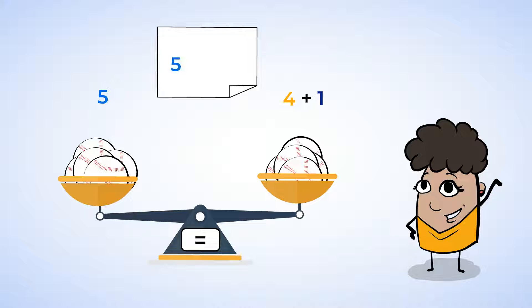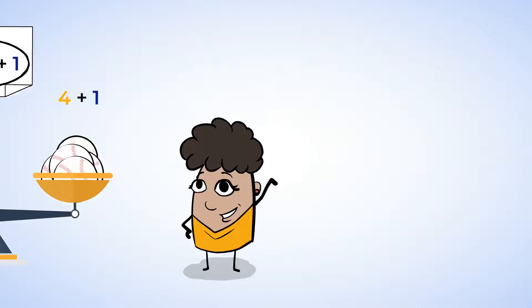And this means that five and four plus one are the same. We can say that they are equal, and we can put an equal sign between them. Five equals four plus one. Now we can check this by counting the baseballs on the right side. We have one, two, three, four, five. There are five baseballs on each side of the scale. And so now we're sure that both sides are equal. Good job. That was kind of fun. You want to try again?